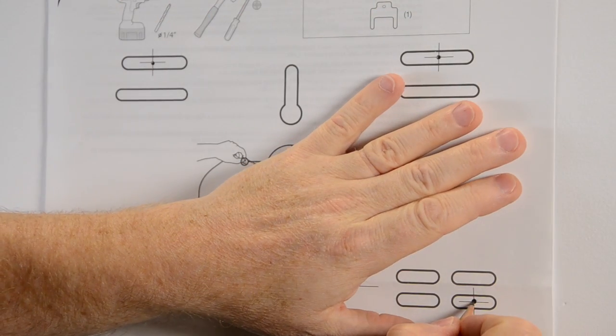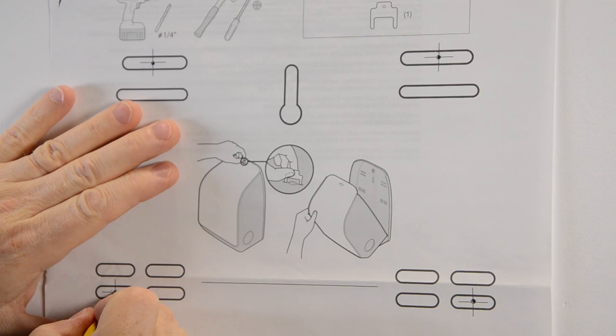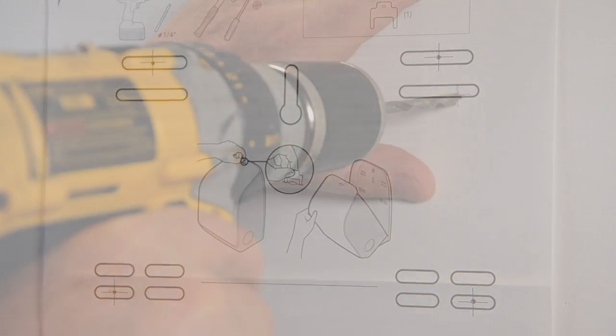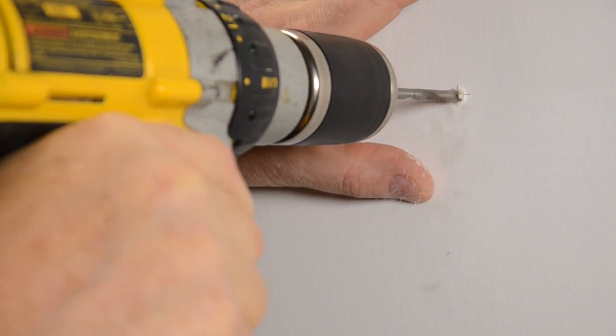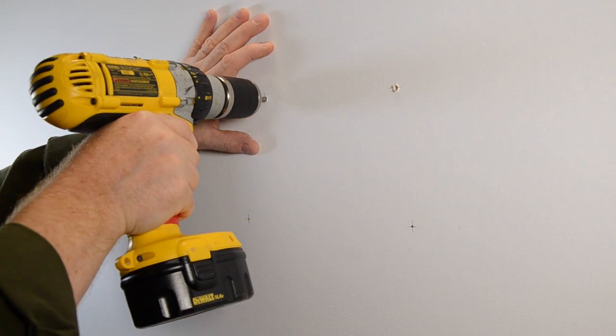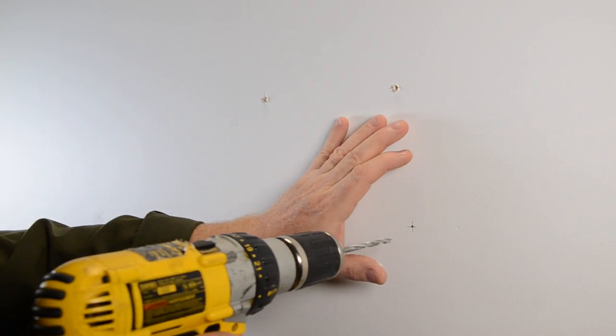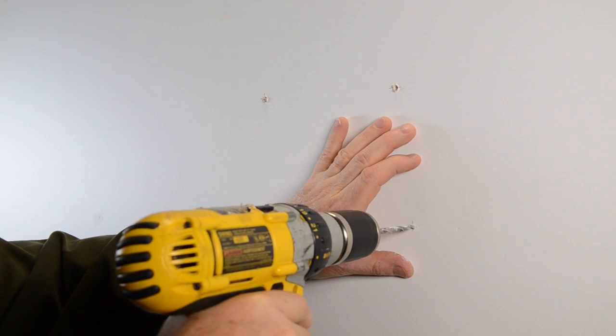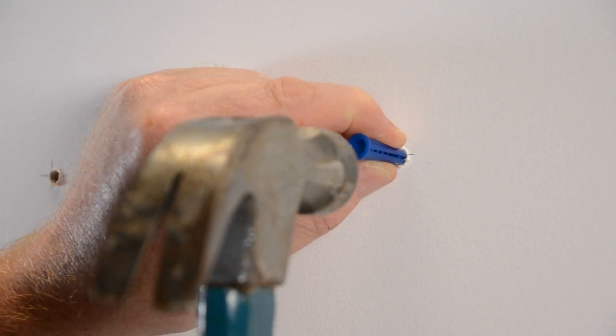Use the enclosed template to mark holes for drilling. Drill the holes using a quarter inch drill bit. Insert the wall anchors into the holes.